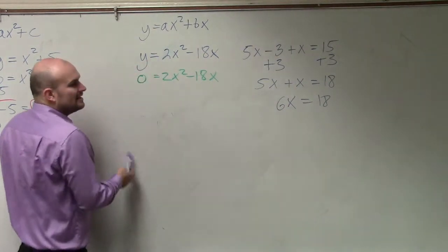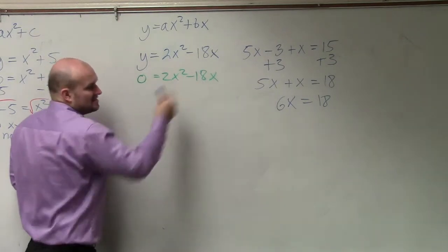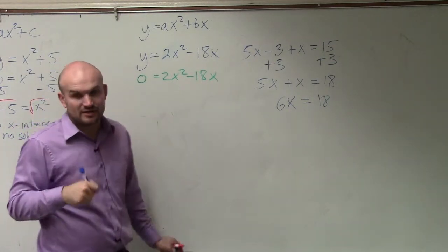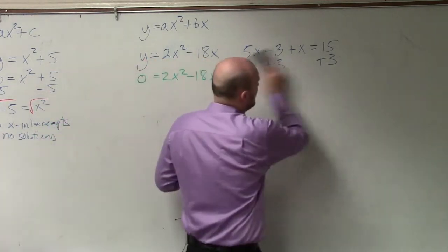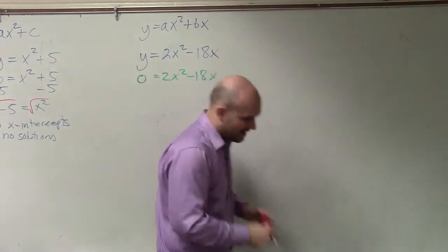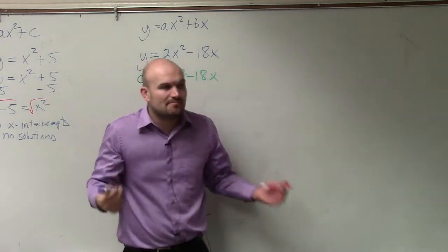The problem here is this is x squared, which has two x's as its factors. And this has x, which only has one x as a factor. Therefore, they don't have the same variable factors. So we can't combine them. So we need to think of a different way to solve this problem because we can't combine them.